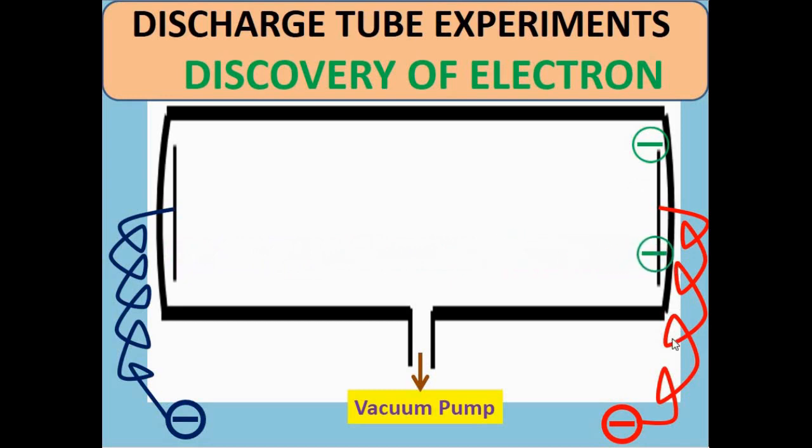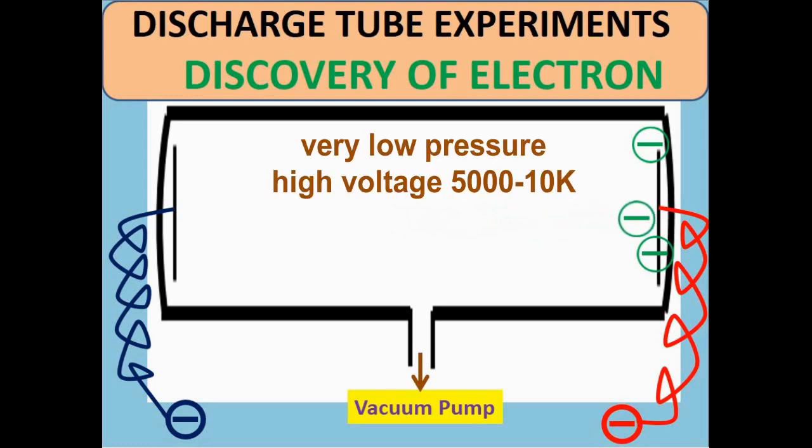Then the uniform glow of tube disappears and the electrons are produced. These electrons travel from cathode to anode surface and causes the fluorescence.